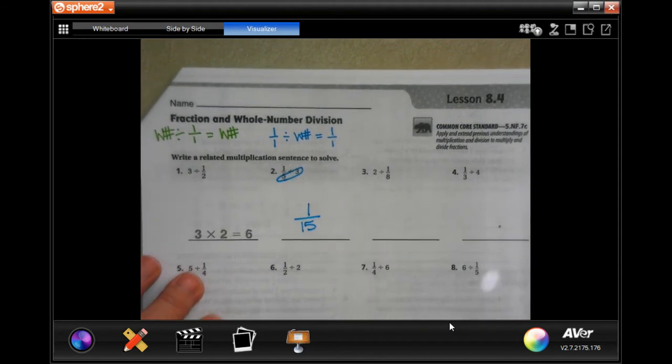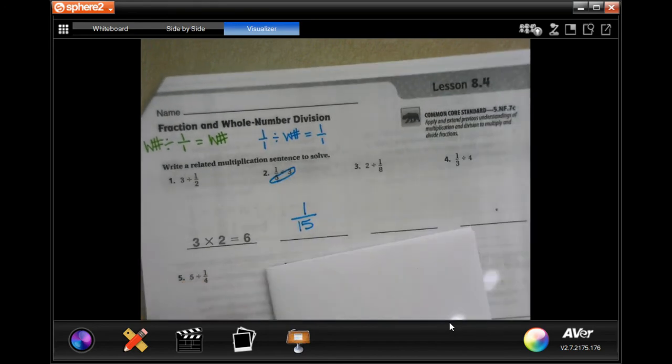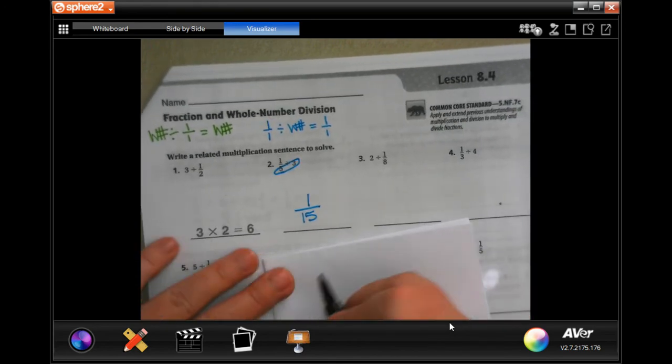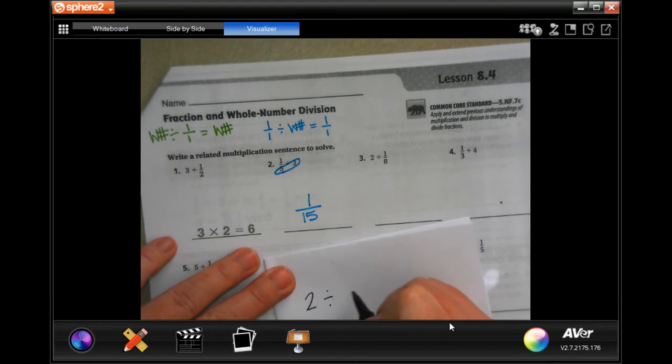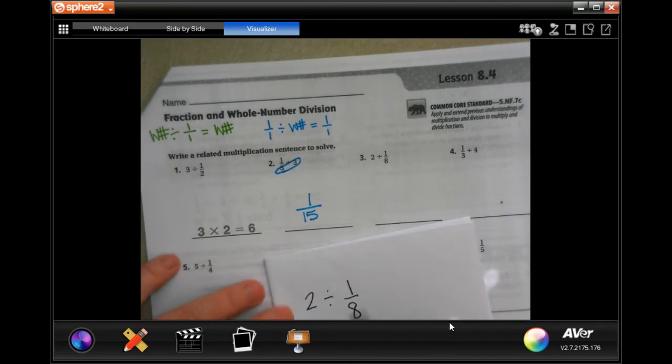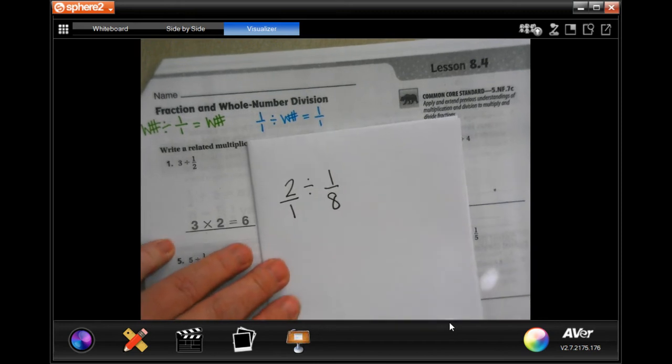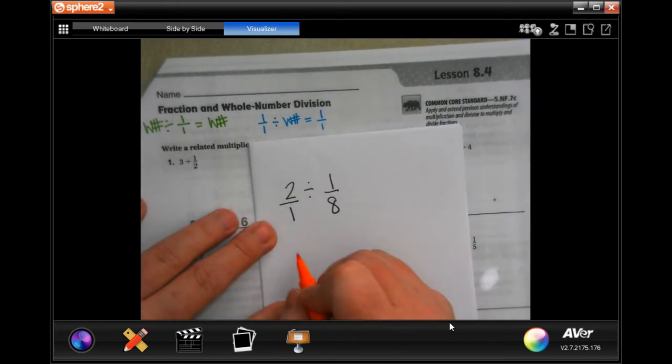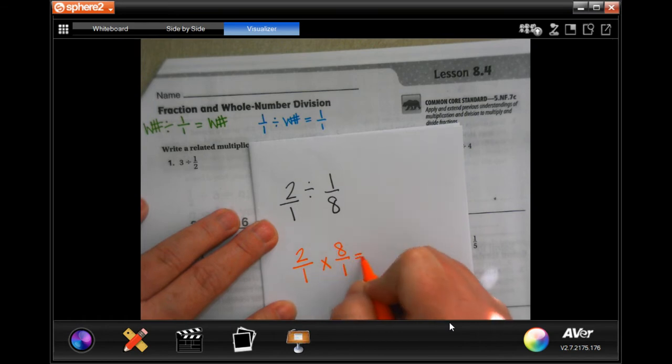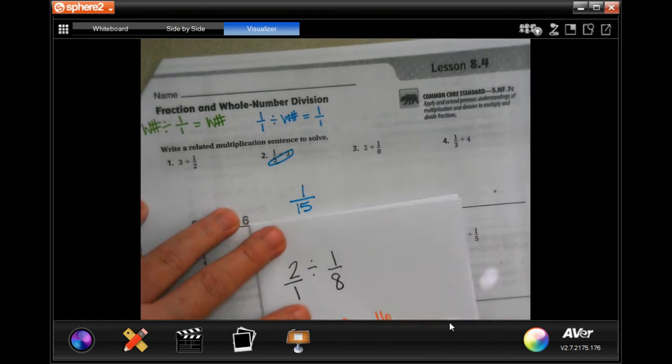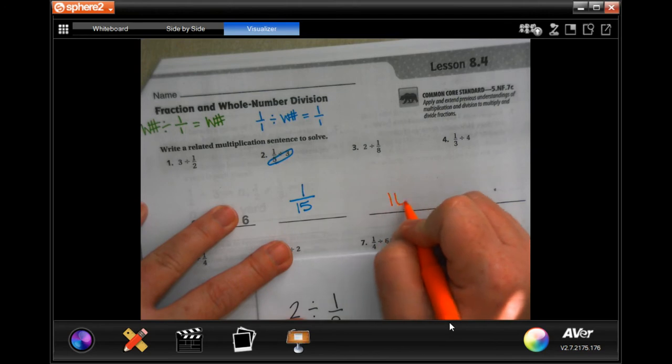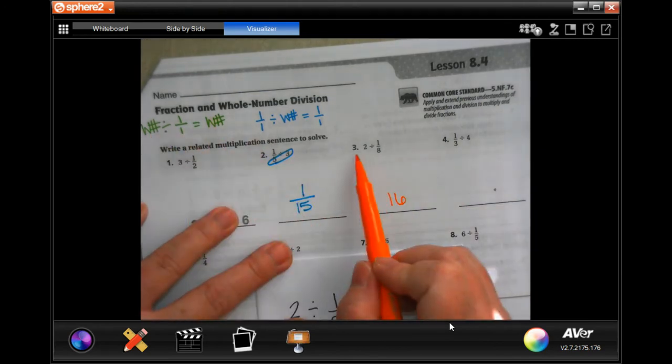Now, if you choose, you can absolutely write out your keep change flip. There is nothing wrong with that. You would keep, you would change, and you would flip, and you would get 16 for number 3. Because a whole number divided by a fraction, you're going to get a whole number.